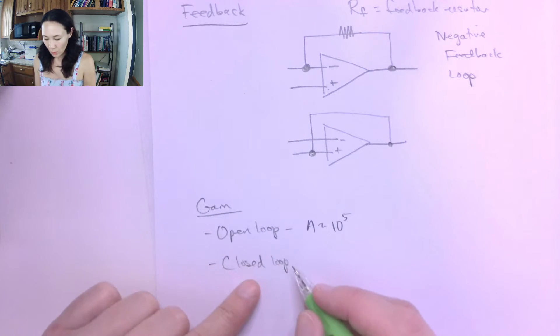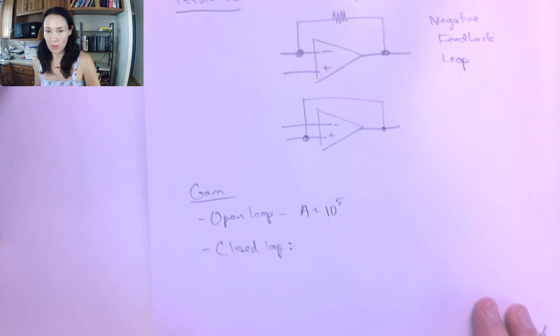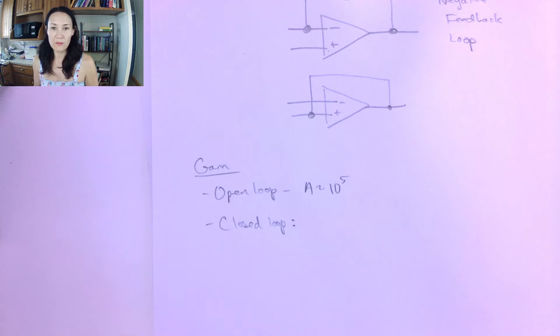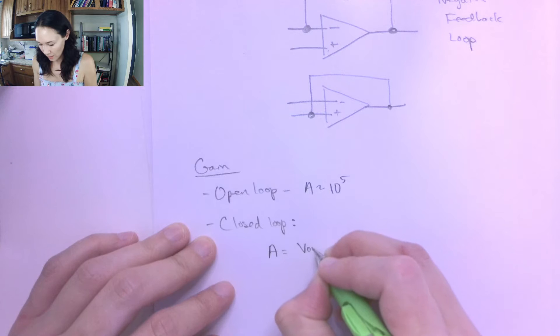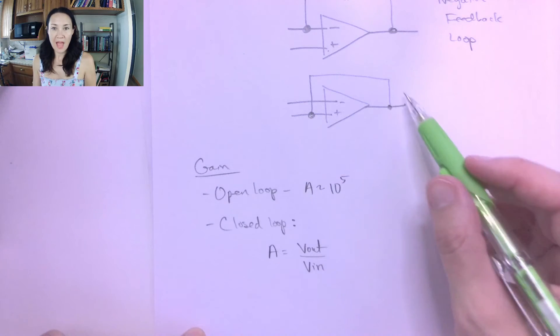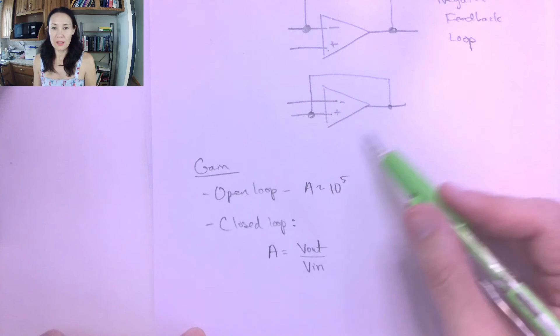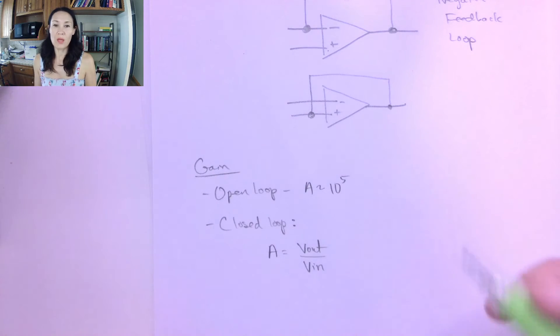But if you do see a feedback loop like this, which in most problems we will, we're going to be using this closed loop gain. And the closed loop gain is kind of like a more intuitive definition of what gain is. It's V out over V in. So if you take your output and you divide by your input, if there is some amplification that occurs on the output and you divide by the input, then that's going to give you the ratio that the amplifier boosted your input signal.